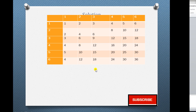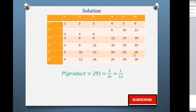The second part asks for the probability of getting a product greater than 29. Checking our outcomes, the numbers greater than 29 are 30, 30, and 36 — only three outcomes. The probability is the number of favorable events, which is 3, out of the sample space of 36 total outcomes. So the probability is 3 over 36, which simplifies to 1 over 12. This brings us to the end of the solution to question 10.